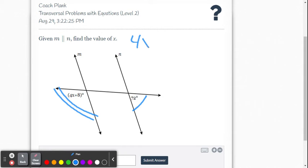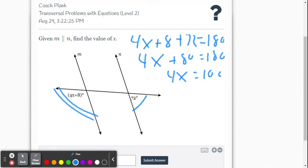So we're going to go 4x plus 8 plus 72 equals 180. So then we're going to get 4x plus 80 equals 180. So subtract 80 from both sides. 4x equals 100. Divide both sides by 4. x equals 25.